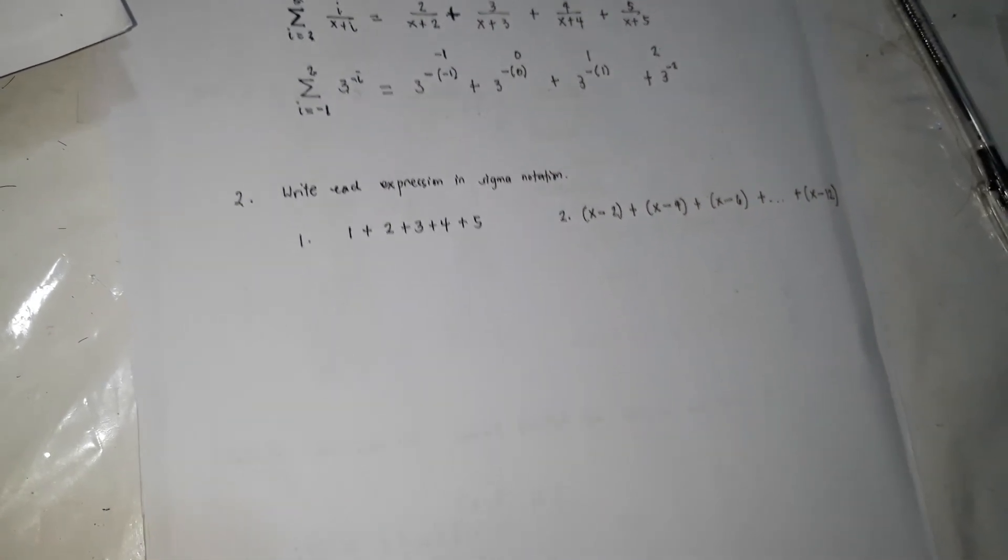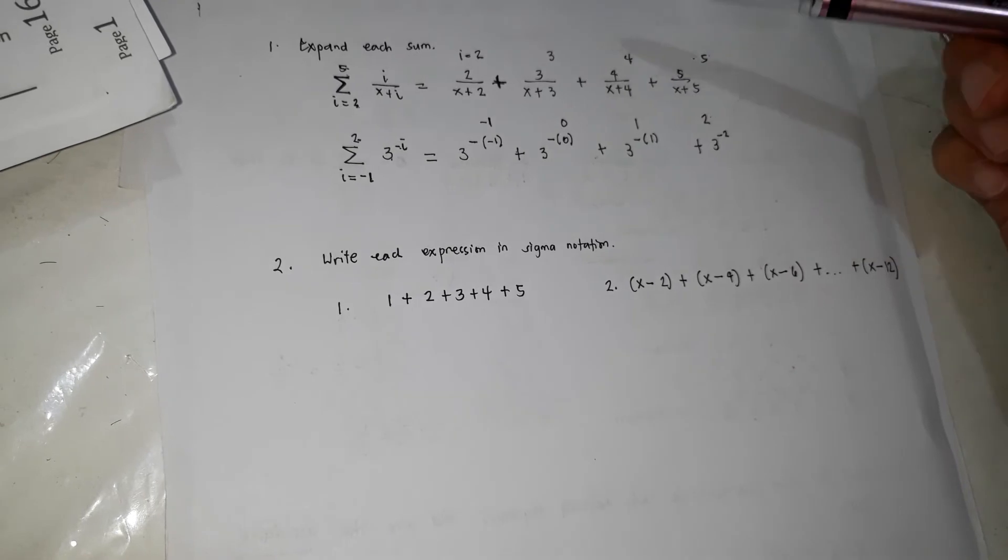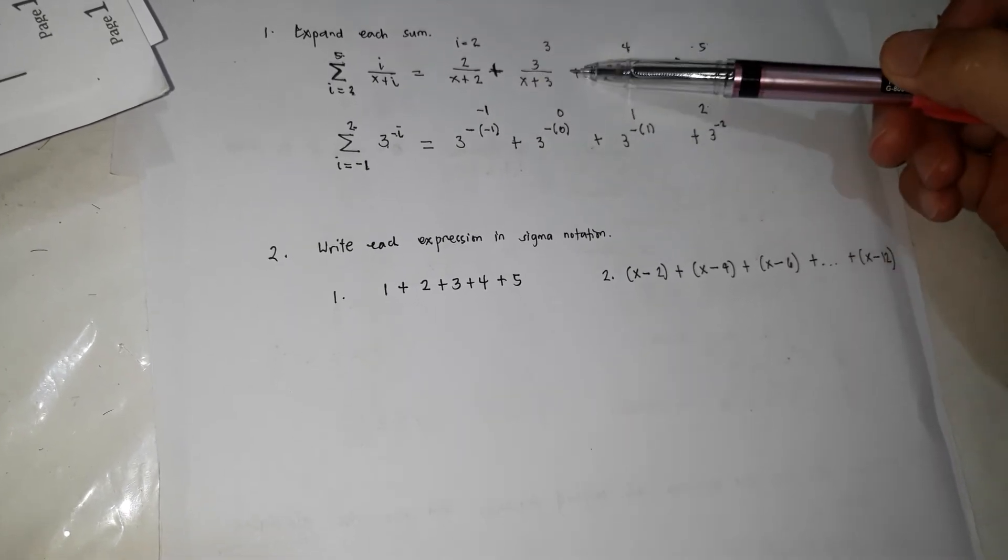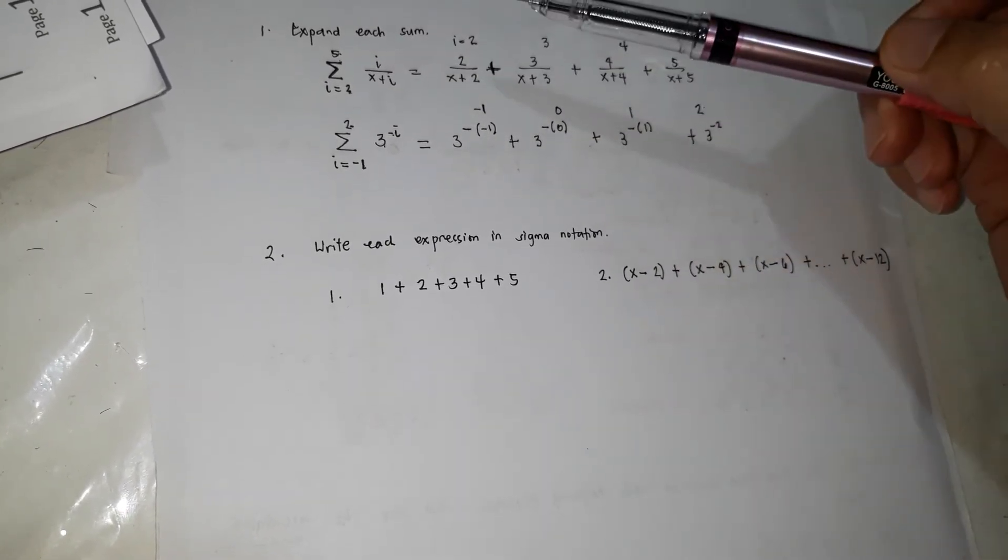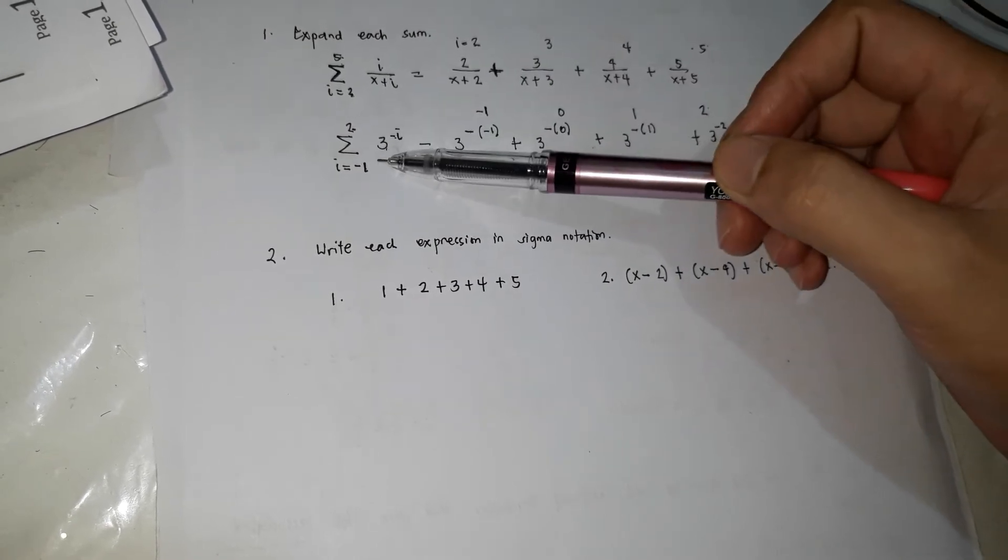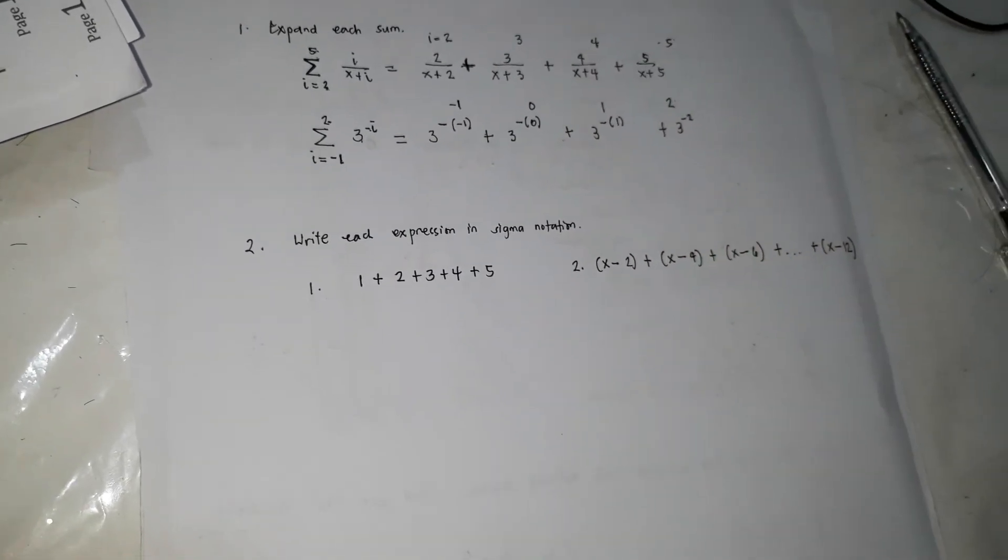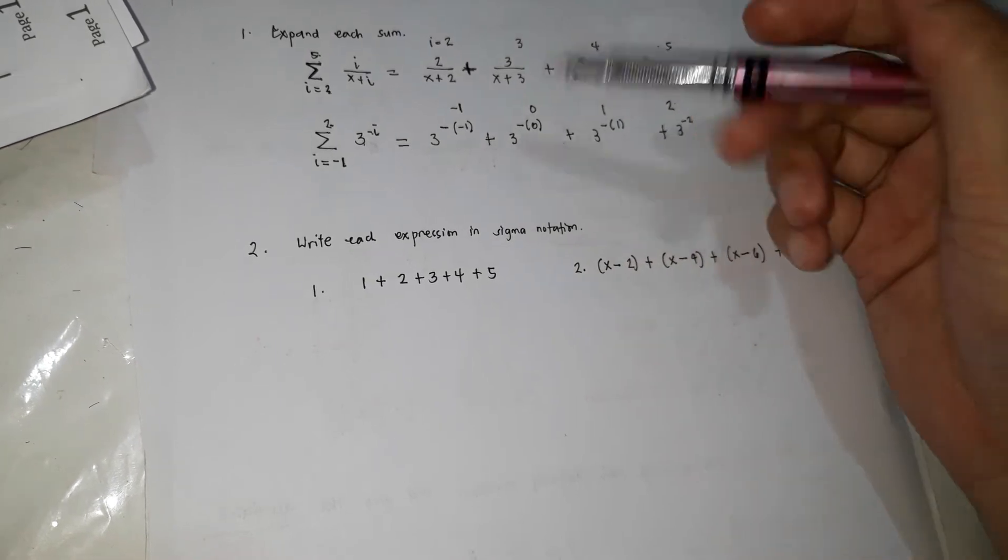Next naman, we're going to write, kablik tala nito, vice versa. Instead of the given ito, we're going to find this. Given ito, we're going to find this. So write expression in sigma notation.